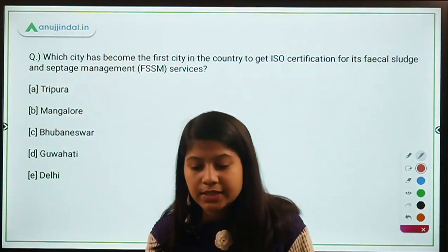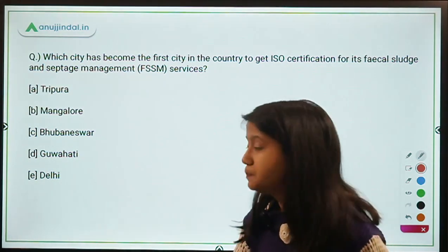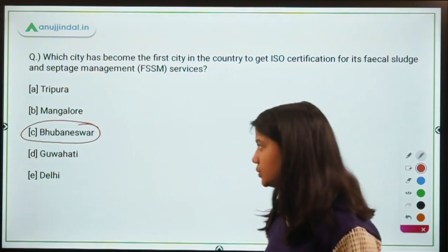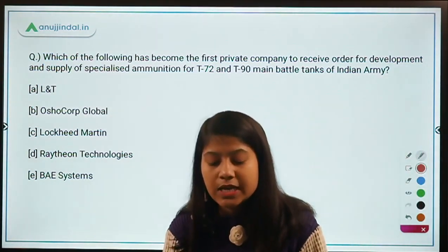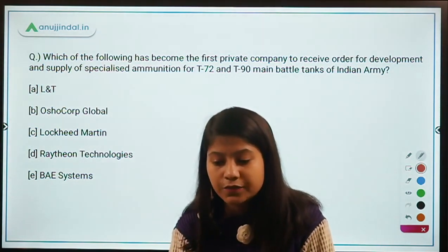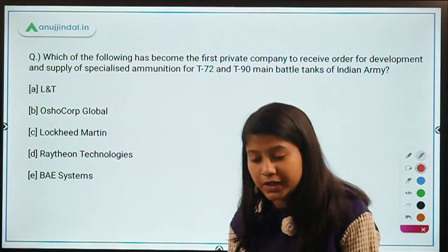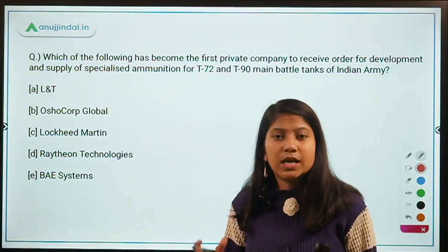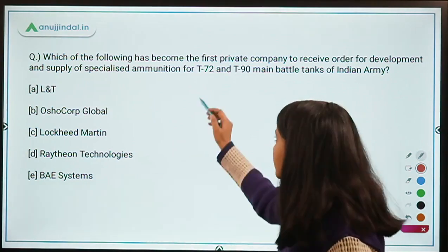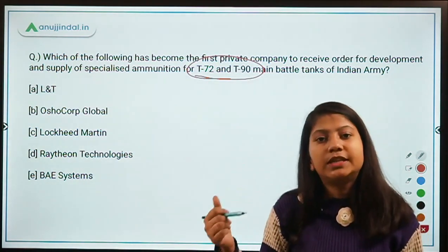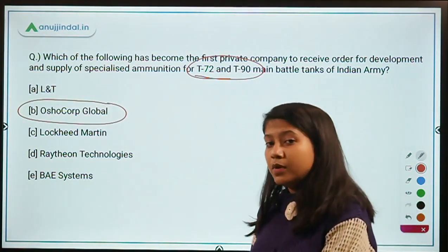Which city has become the first in the country to get ISO certification for its Fecal Sludge and Septage Management Services? It is the capital of Odisha — Bhubaneswar. Next: which of the following has become the first private company to receive an order for development and supply of specialized ammunition for T-72 and T-90 main battle tanks of the Indian Army? The right answer is Astra Corp Global — the private company that received this contract.